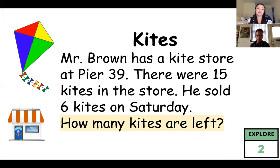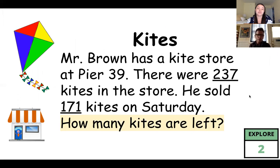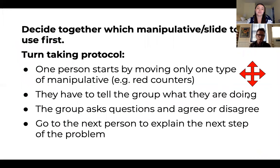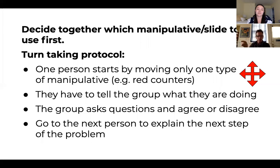For our task, we're going to solve that first question: how many kites are left? This is a first-grade problem, but on the next slide you'll see numbers more amenable to a third grader — not probably real numbers for a kite store at Pier 39. We're going to ask you, if you teach third through fifth grade, to solve that version, and if you teach K through 2 to solve the previous problem. Once you get to the problem-solving part, decide with your partner which manipulative slide to use first, then take turns: one person moves the manipulatives and explains what they're doing, the others ask questions and agree or disagree, then swap turns.